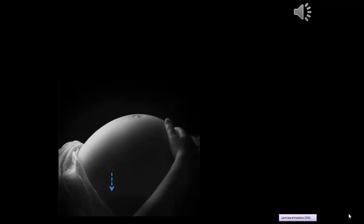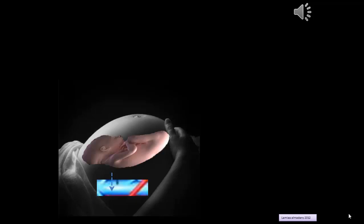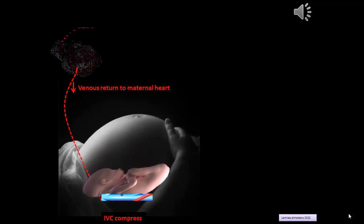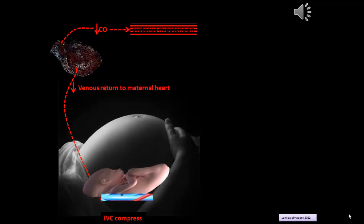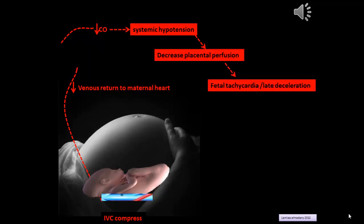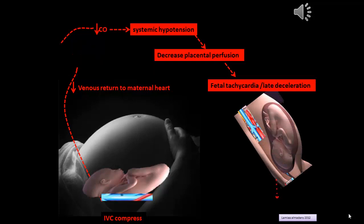When conducting a CTG, do not place the lady in a flat position, because the baby will compress the inferior vena cava, leading to reduced venous return to the maternal heart, reduced cardiac output, systemic hypotension, decreased placental perfusion, fetal tachycardia, and late deceleration. The patient should be placed in a semi-sitting position or with a pillow below her right shoulder to prevent inferior vena cava compression.